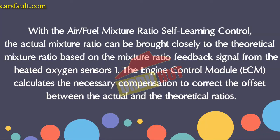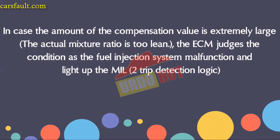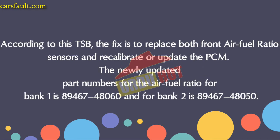With the air-fuel mixture ratio self-learning control, the actual mixture ratio can be brought closely to the theoretical mixture ratio based on the mixture ratio feedback signal from the heated oxygen sensor. The engine control module calculates the necessary compensation to correct the offset between the actual and theoretical ratio. If the compensation value is extremely large and the actual mixture ratio is too lean, the ECM judges the condition as a fuel injection system malfunction and lights up the MIL using a two-trip detection logic.